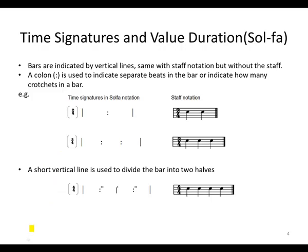Time signatures and value duration in Sol-fa. First of all, bars are indicated by vertical lines. It's the same with staff notation, but without the staff. A colon is used to indicate separate beats in the bar or indicate how many crotchets are in the bar. So as we can see in the example, a two-four time. In staff notation, it will be two crotchets like that. In Sol-fa notation, we will see by the colon that we got two separate beats or two crotchets.